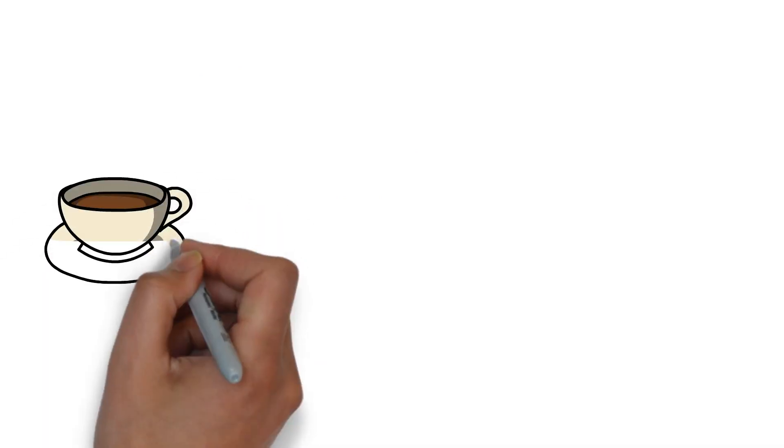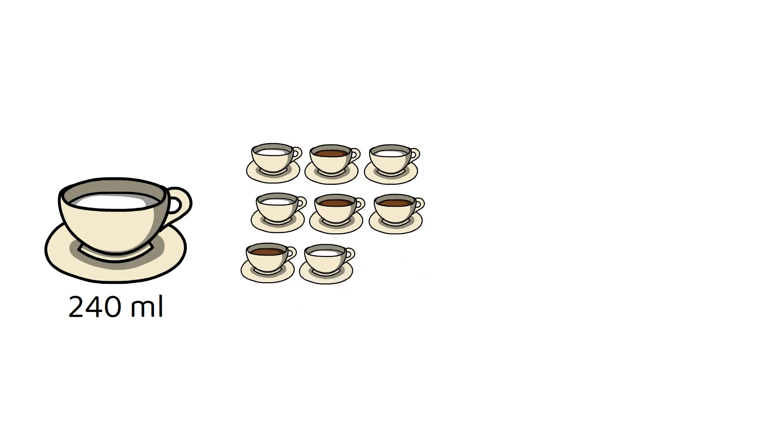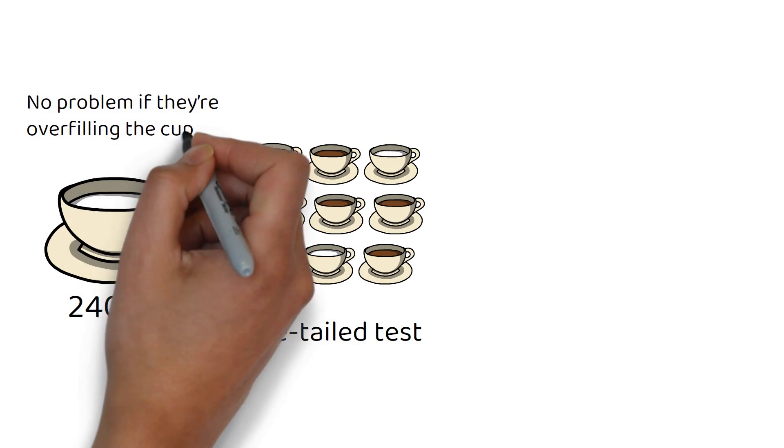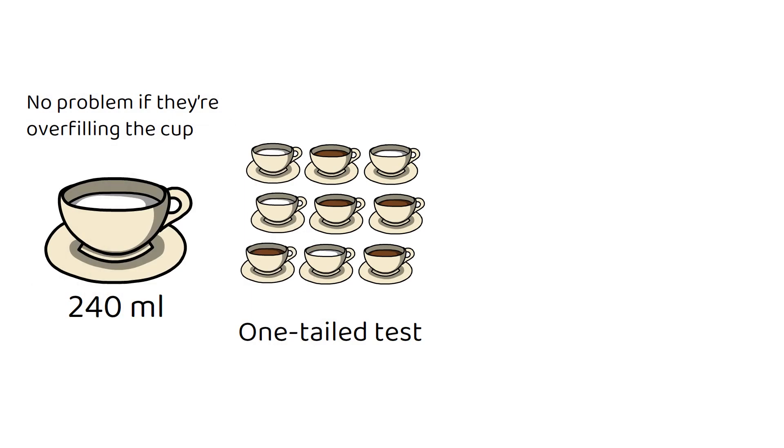Suppose a coffee shop claims that the average amount of coffee they pour into a cup is 240 milliliters. You suspect they might be pouring less than this on average. To test this, you randomly measure the amount of coffee in 40 cups from this coffee shop. Note that this is a one-tailed test, since you're only worried about the coffee shop pouring in less than 240 milliliters. If they're overfilling the cup, you don't have a problem with that. From the sample, you find: